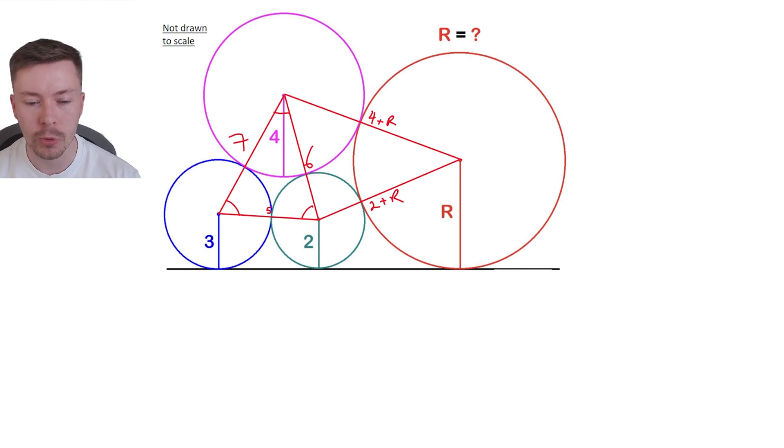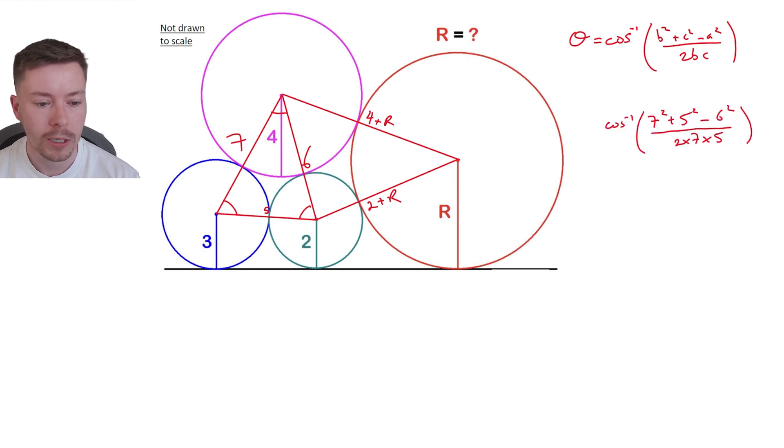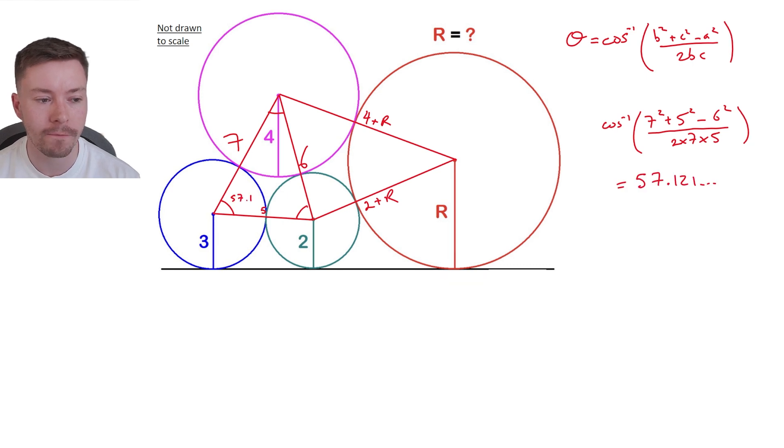To do that I'm going to use inverse cosine rule, which is the cosine rule rearranged so I can work out the angle. I've called the angle theta. I decided to work out the angle on the bottom left of this triangle first, and I got an angle of 57.121 degrees.